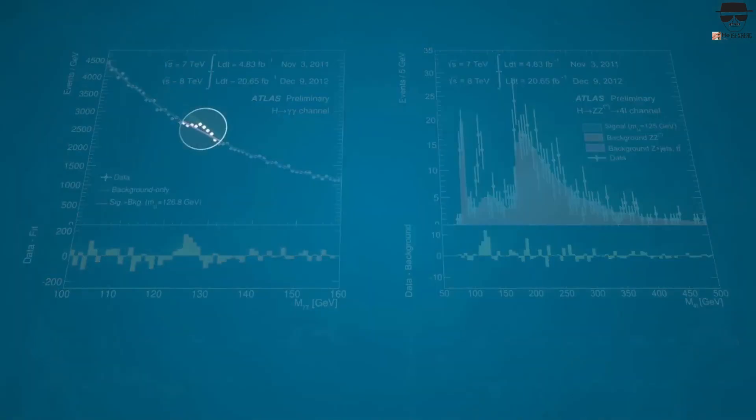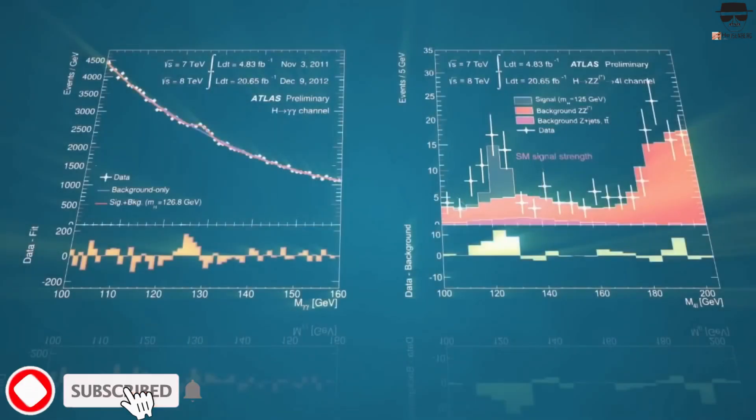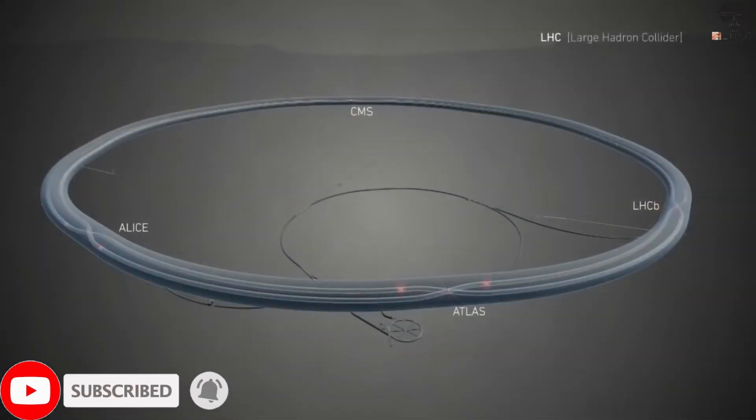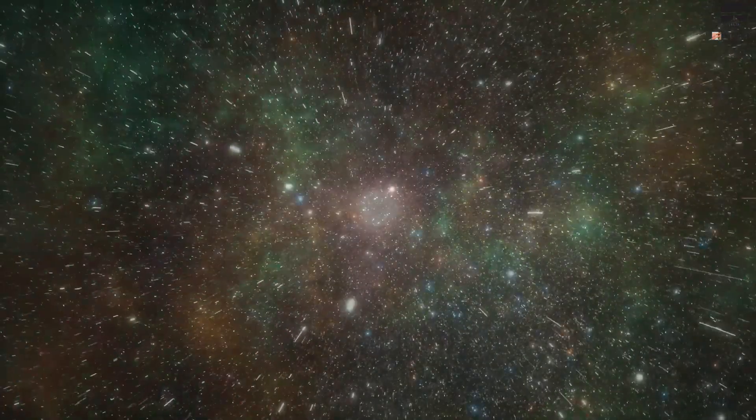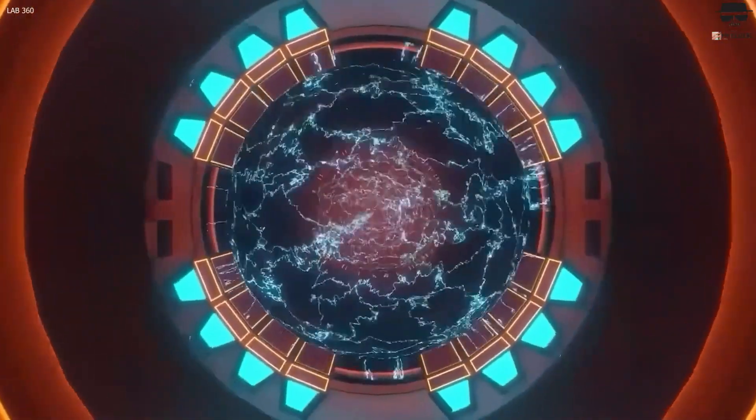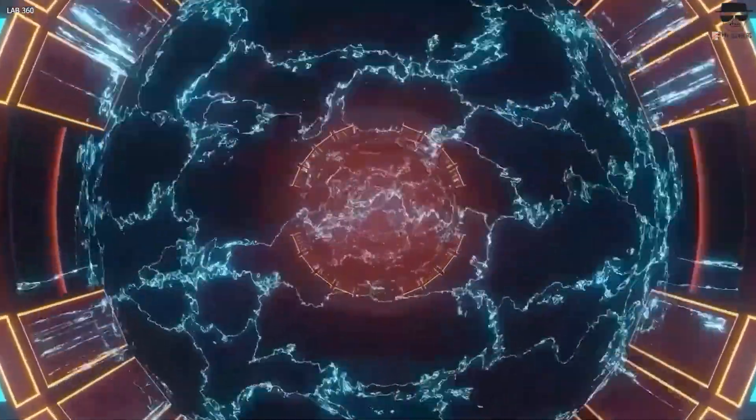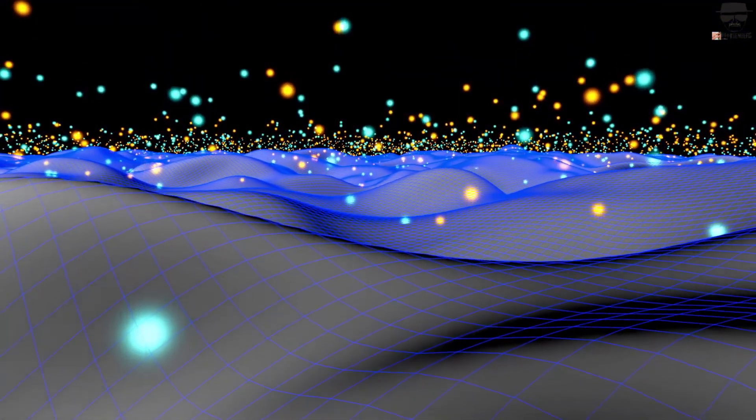The LHC uses superconducting magnets to accelerate two beams of protons in opposite directions around the circular tunnel. The beams are then made to collide at four different points along the accelerator, creating high-energy particle collisions. Scientists then use detectors, such as the CMS and ATLAS detectors, to study the resulting interactions and gather data on the properties of particles and the forces that govern them.